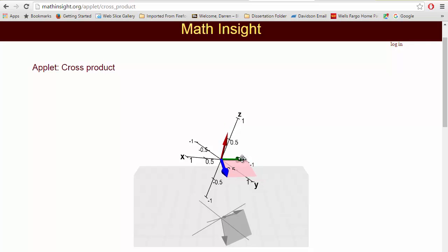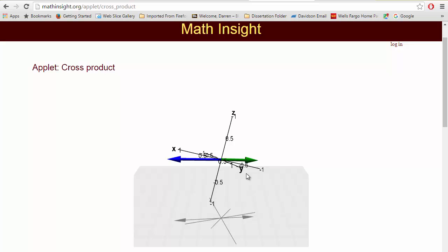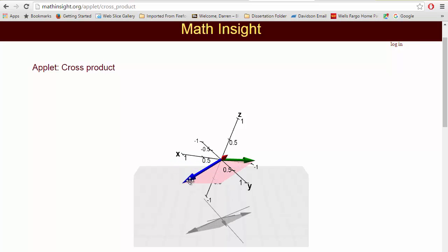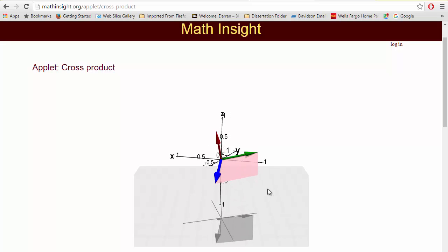Also, watch this. If I make these two vectors, the green and the blue, be linear, watch what happens to the size. If the angle between the two vectors is 180 degrees, I have no cross product. So cross product is like you got to commit to one side or the other of 180 degrees before you get to have a cross product.